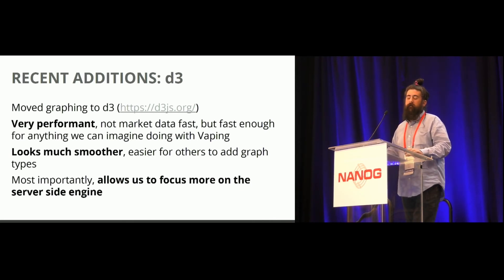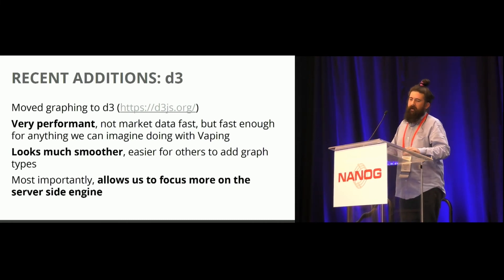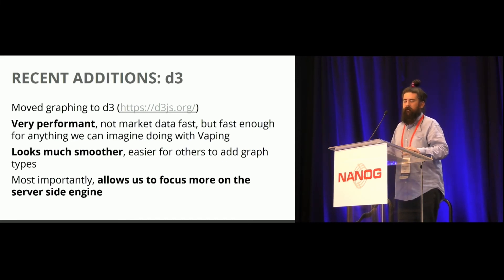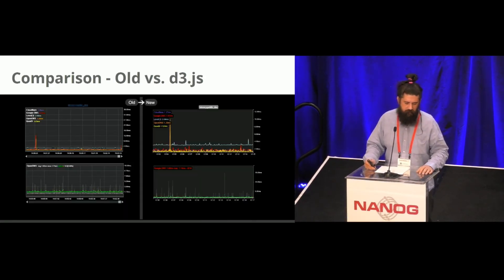We moved to D3.js, which is an open source library for doing graphs in JavaScript. It's well-supported, and it's quite fast for us — not quite as fast as our old custom graphs when we used to deal with 10,000 messages a second, but it seems really good depending on the size of your config. The best part is now we don't have to maintain it — there are a bunch of other people taking care of the graphing, fixing problems and adding features. You can see the side-by-side comparison of old versus new, and it's pretty much the same.